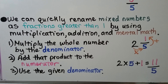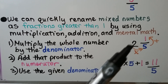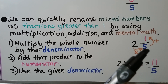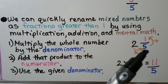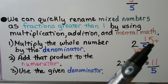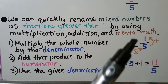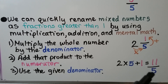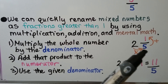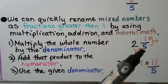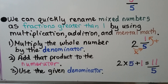We can quickly rename mixed numbers as fractions greater than 1 by using multiplication, addition, and mental math. The first thing we do is multiply the whole number by the denominator: 2 times 5. We add that product to the numerator — 2 times 5 is 10, plus 1 more is 11. We use the given denominator, that 5. We have 11 fifths. Multiply the whole number by the denominator and add the numerator to get the new numerator.